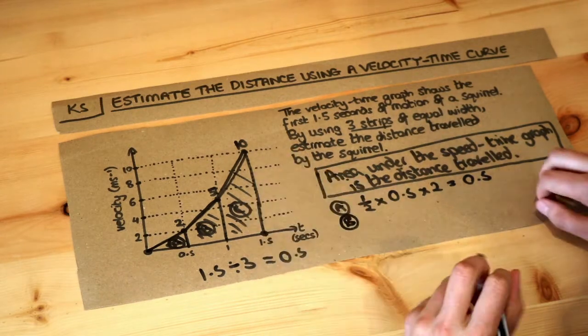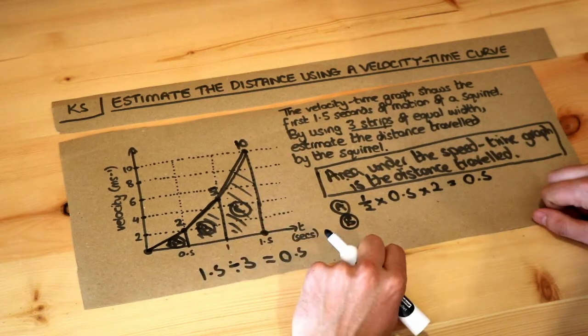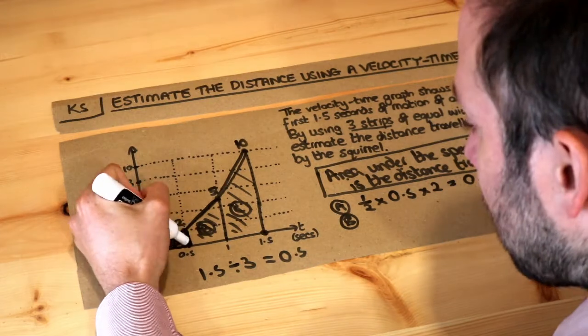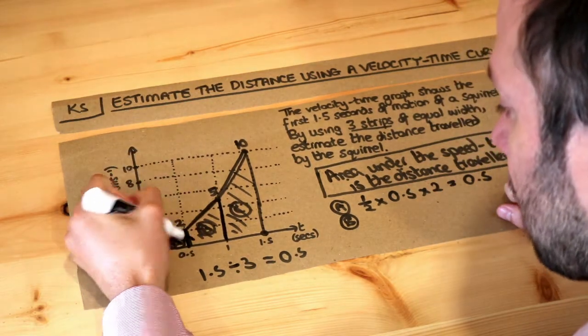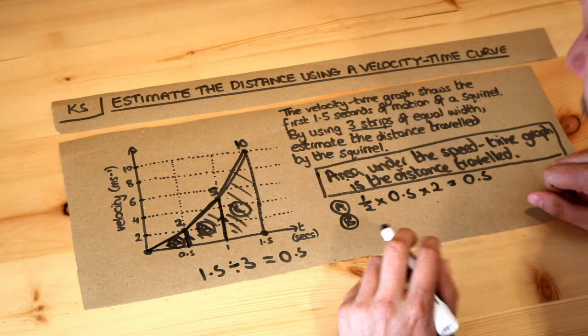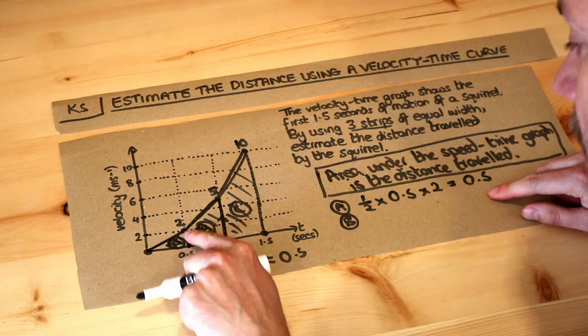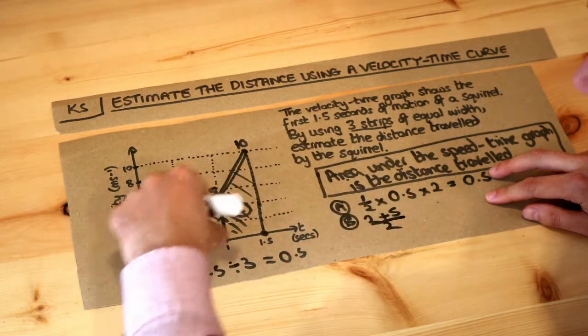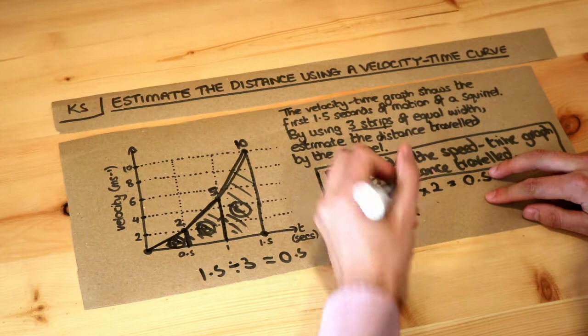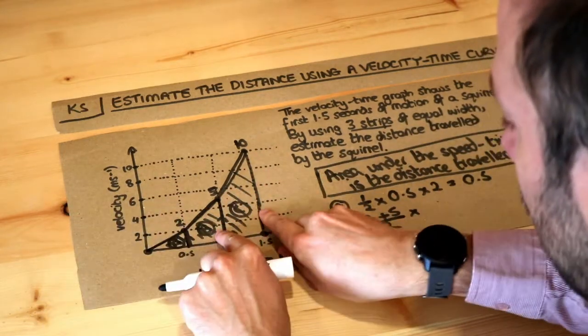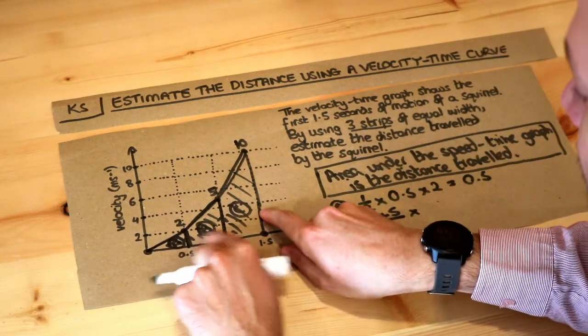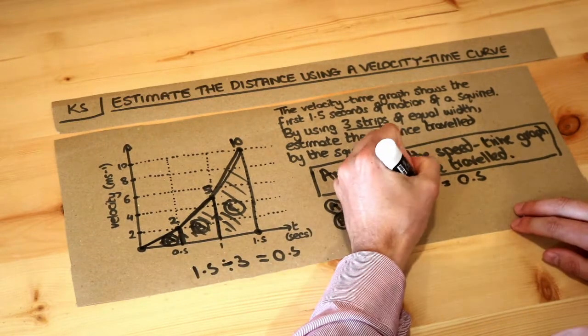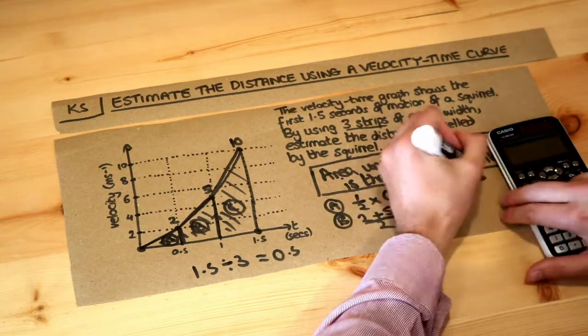What about the area of b? Well, b is a trapezium, so we can do the average of the parallel sides multiplied by the height between them. These here are the two parallel sides, so this side and this side are the parallel sides. So we do the average of the parallel sides, so that's 2 plus 5 divided by 2. That's the average of this length and this length, the parallel sides, and then we times it by the height between them. These are two parallel sides, this will be the height between them, which in this case is a horizontal distance. We can see that's a width of 0.5. So if we put that into our calculator, we get 1.75.